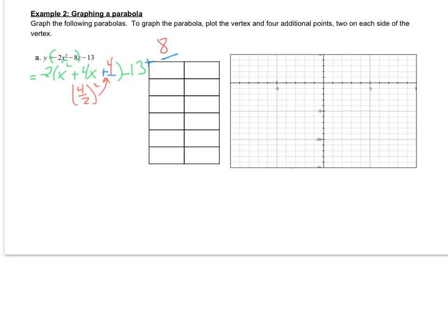Leaving me with my equation that y equals negative 2 times x plus 2 squared minus 5. Now with that, I have my vertex. My vertex is negative 2, negative 5.